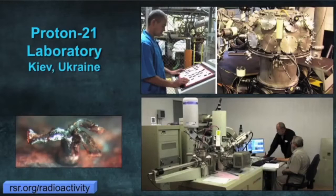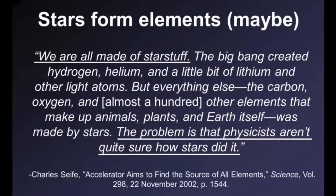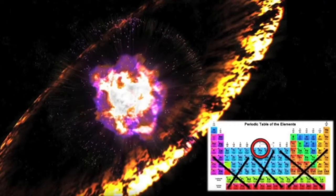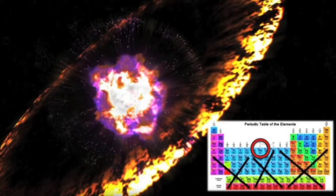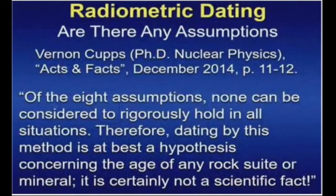This was observed at the Proton 21 Laboratories in Ukraine. Evolutionists claim that earth's radioactive elements came from material that evolved inside a star that exploded, with the debris later forming earth. But we now know stars cannot create any element above iron, so their theory cannot be true. Evolution has been dealt its death blow regarding radiometric dating.